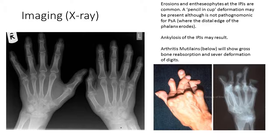Imaging is very useful, alongside the CASPAR classification, for diagnosis and for monitoring disease post-diagnosis. Erosions and enthesiophytes of the IPJs are common. A pencil-in-cup deformity may present in severe cases, where the distal edge of the phalanx erodes. Ankylosis of the IPJs may result, and in severe presentations — arthritis mutilans — there is gross bone reabsorption and severe deformation of the digits, almost as if the digits dissolve, which can be very destructive.